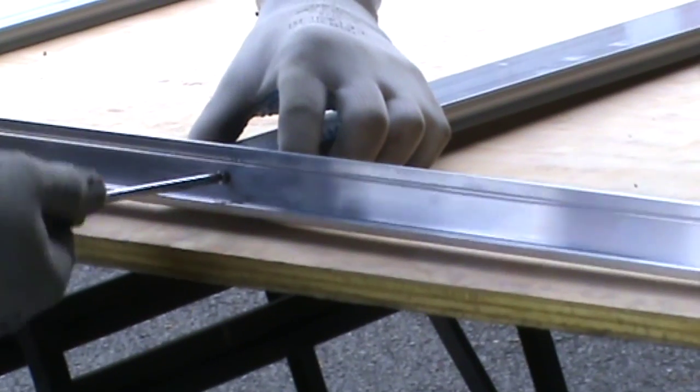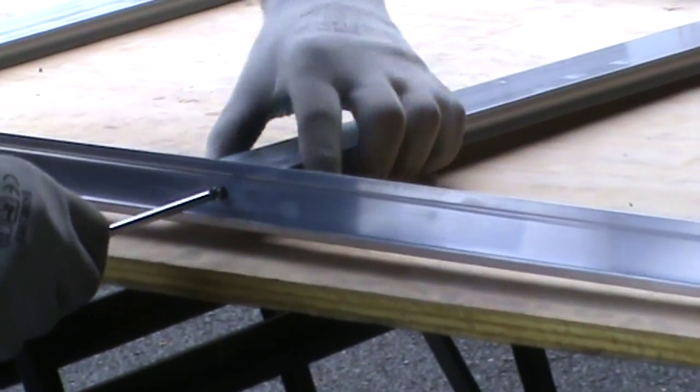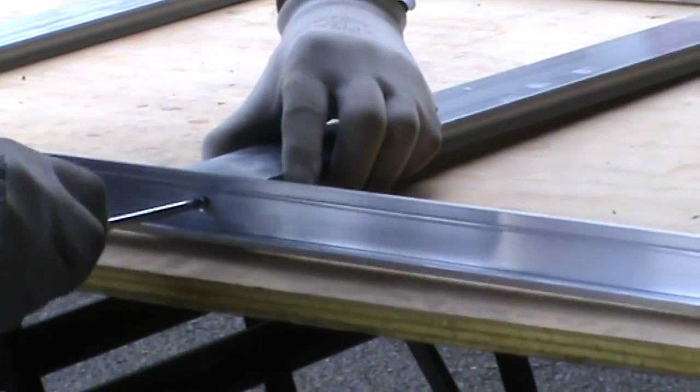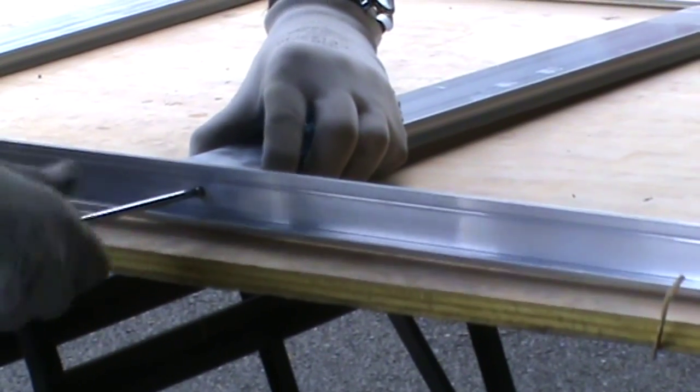Move along the door post and screw in the other two infill panels. Slightly lift the panel as you are going along so you don't tear the beading already inserted.